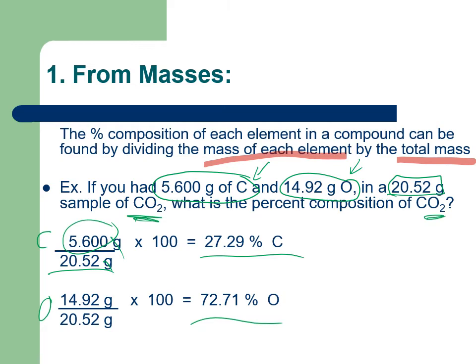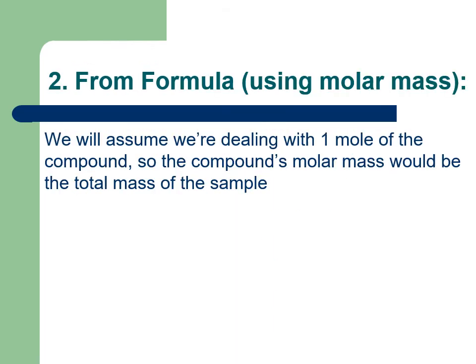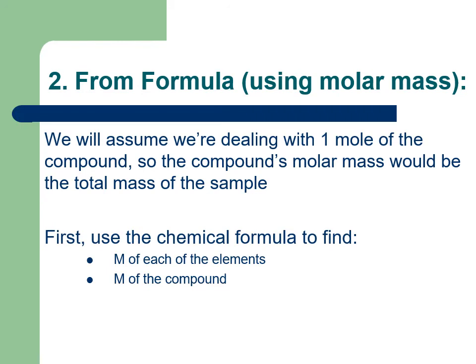We can also get these percentages if we don't have those measured masses, as long as we do have the formula. If we look at the formula, we could say, okay, that's like one molecule of it and there's a certain number of atoms of each one. We're going to use molar masses, so we're going to assume we're dealing with a mole of that particular element. We'll look at the molar mass of each of the elements and divide that by the whole thing, the molar mass of the compound.